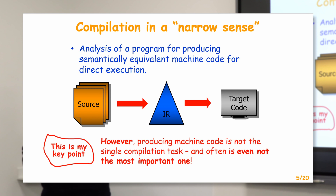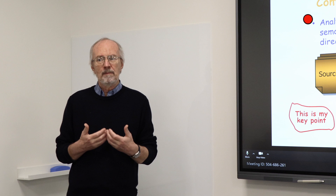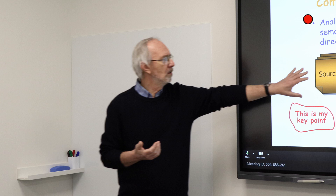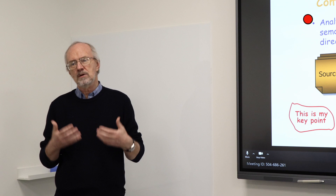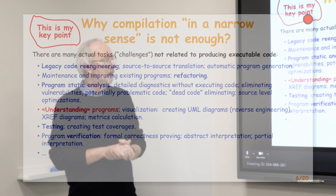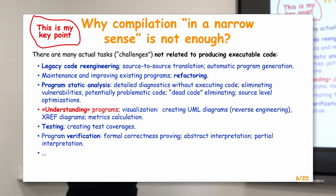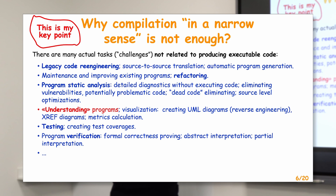In very many cases, code generation is not the most important task. Program understanding — or different actions on the source code, not only code generation — is often more important than just generation of target code. There are many actual tasks not related to producing executable code, and many of these tasks, if not all of them, are at least of the same importance as code generation.